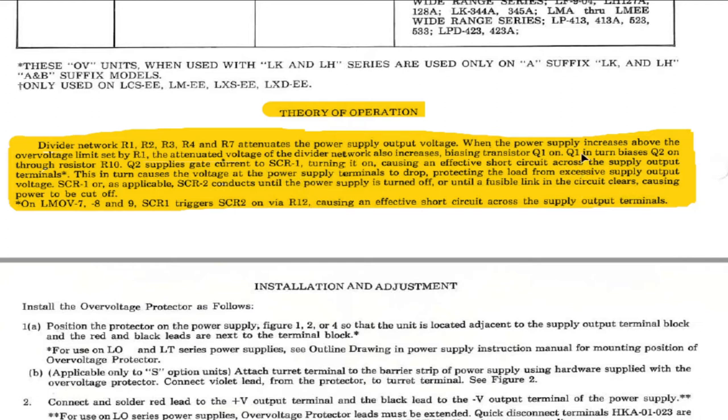And when Q1 is biased on it turns on, it biases on Q2. And Q2 being biased on puts a voltage on the gate of the silicon control rectifier which is wired across the input and it just crowbars or short circuits the supply.